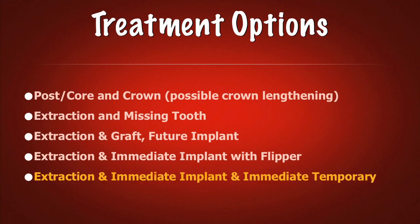Our final option, and obviously the option that we choose in this scenario, is to take the tooth out, place an immediate implant, and assuming we get enough primary stability, place an immediate temporary. The key here is to plan for taking the tooth out atraumatically, planning to place the implant immediately into a reasonable amount of fresh bone to gain primary stability, and having a technique to produce a temporary to place onto that implant.